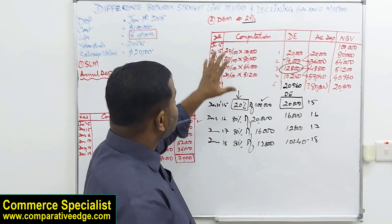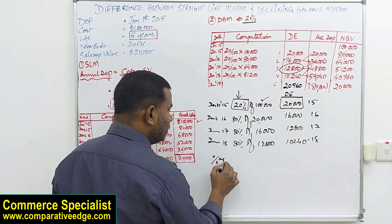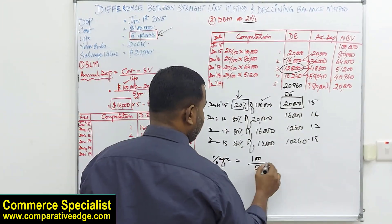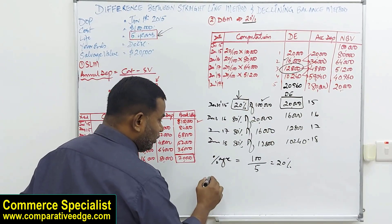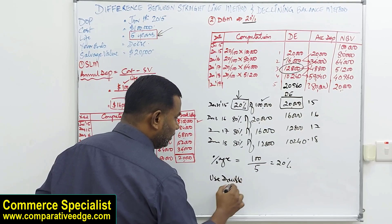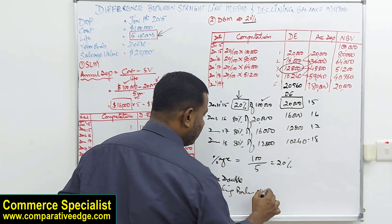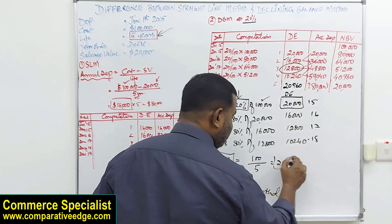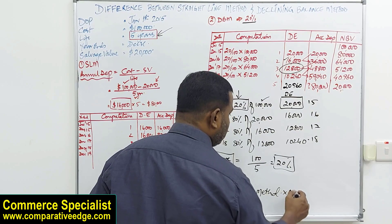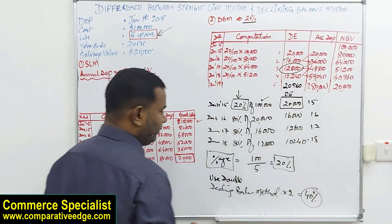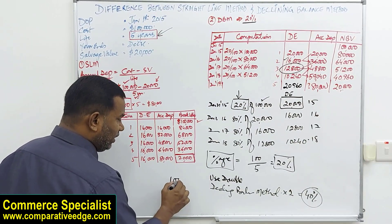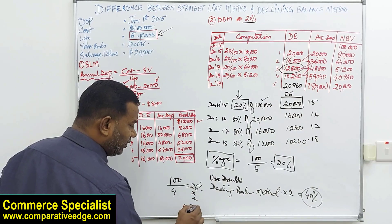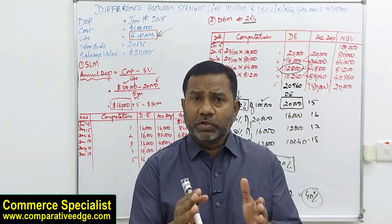One more thing: sometimes in declining balance method they don't give you the percentage. A quick way to find it is to take 100 divided by life in years. With a five-year life, 100 divided by 5 equals 20%. Sometimes they say use double declining balance method and don't give you the rate. First find the percentage — 100 divided by life in years — then multiply by 2. So with a five-year life, 20% times 2 equals 40% for double declining balance. With a four-year life, 25% times 2 equals 50%.